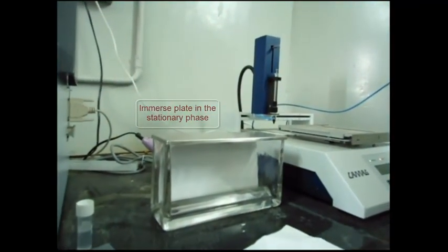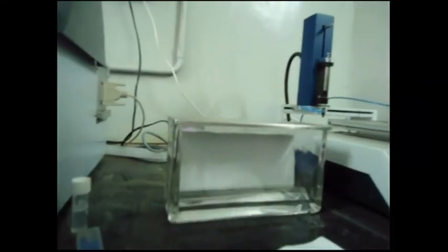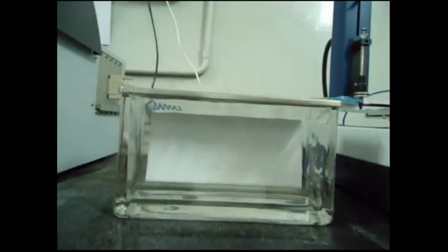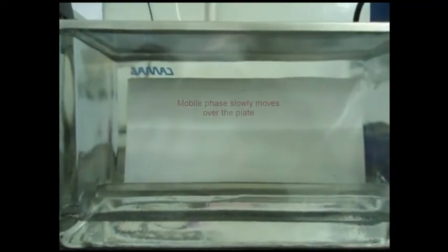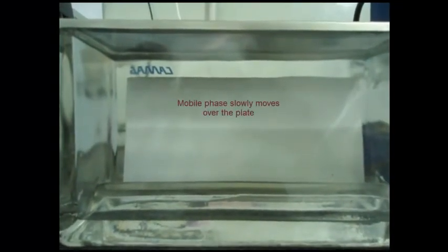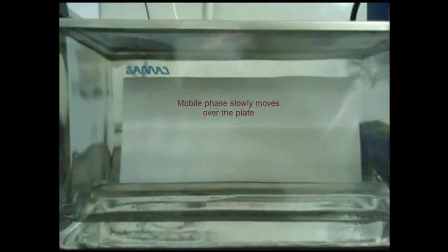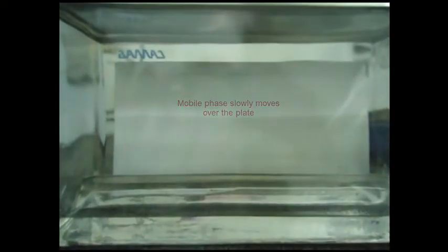Mark 8 cm from the bottom on the chromatographic plate. Then immerse the chromatographic plate inside the twin chamber and allow the mobile phase to move over the plate. Never allow the mobile phase to move over the marked position.